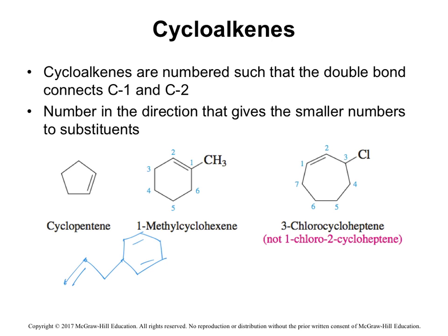You always number cycloalkenes to where they're in contiguous order, always between carbons one and two, or from lower number to higher number. That's really important. In this instance right here, for example, it's not one chloro. It's going to be three chlorocyclohepatene. Or you wouldn't even say two or whatever. Because this, first of all, is priority. And secondly, it always has to be between one and two. It can't be between one and two this direction, because otherwise that would make the chlorine too high.